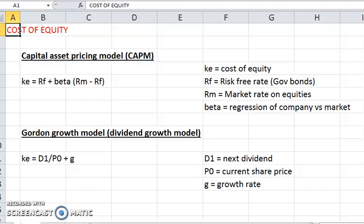So let's look at the CAPM first. You'll see the formula is the risk-free rate plus the beta times the market rate minus the risk-free rate. To simplify it, you'll see it's the risk-free rate plus beta multiplied by the market premium.